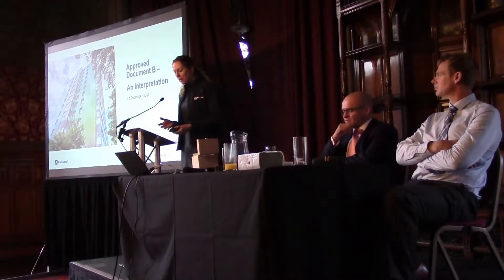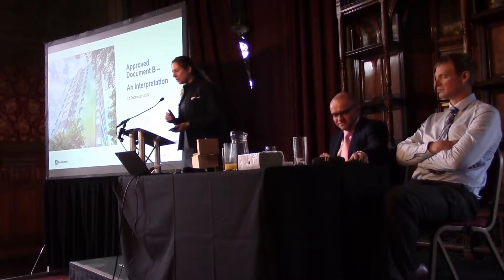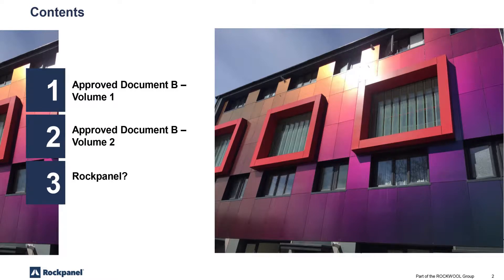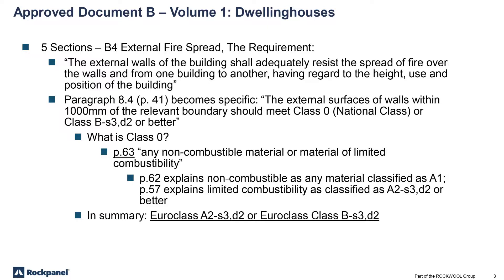I'm going to take you through a little tour of a pre-Approved Document B. So that's Volume 1, which is Dwelling Houses. Volume 2 is anything other than a dwelling house, and a tiny little bit about rock panel at the end.